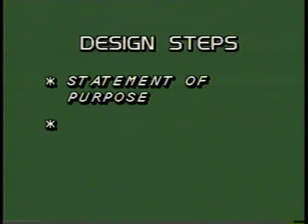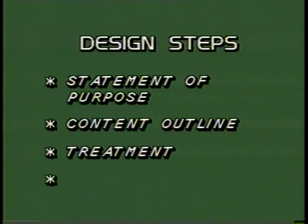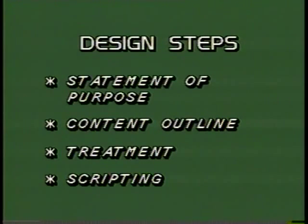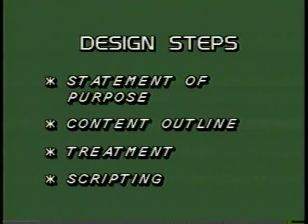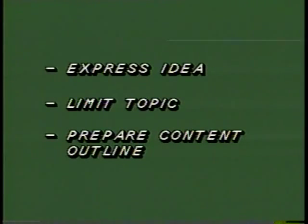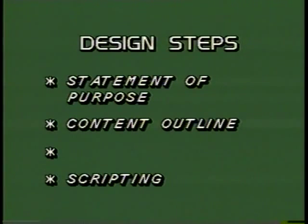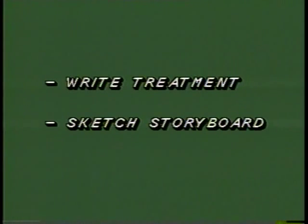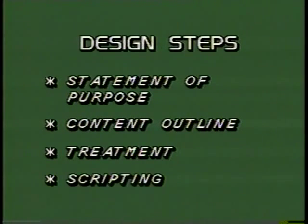The planning and designing of slides and film strips can be done in a 4-step process: statement of purpose, content outline, treatment, and scripting. The first step is to state objectives clearly considering the audience who will see them. Secondly, prepare a content outline after expressing your idea and limiting the topic. Write treatment for organizing the contents and sketching a storyboard for better visualization. Prepare script and make arrangements for preparation.